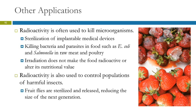Radioactivity can also be used to control populations of harmful insects. You take a batch of fruit flies, sterilize them using radiation, and release them into the fields. They mate with wild fruit flies, but those pairings won't reproduce, cutting down the size of the next generation. It won't eliminate them, but you can minimize the population that way.